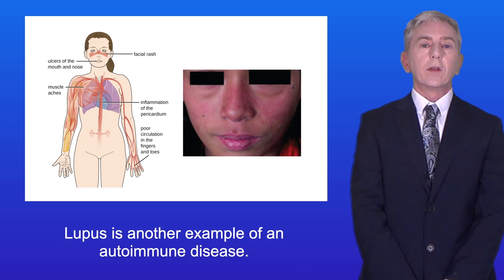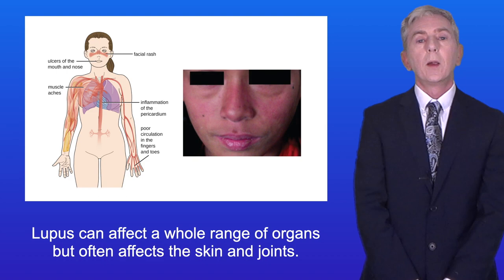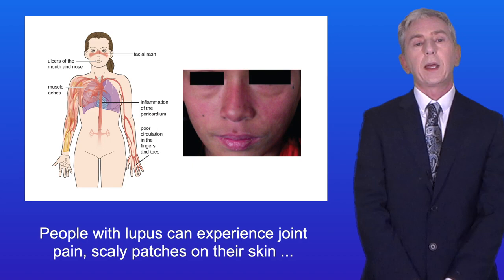Lupus is another example of an autoimmune disease. Lupus can affect a whole range of organs, but often affects the skin and joints. People with lupus can experience joint pain, scaly patches on their skin, and hair loss, among other symptoms.